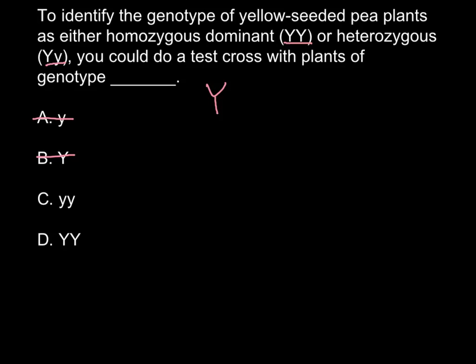When we have a dominant plant that shows a dominant trait and we don't know if it is homozygous dominant or heterozygous, these two possibilities are genetically different — one is homozygous, one is heterozygous — but phenotypically these two plants would look absolutely alike. So how can we find the genetic composition? The easiest way is to cross such a plant with a homozygous recessive plant.